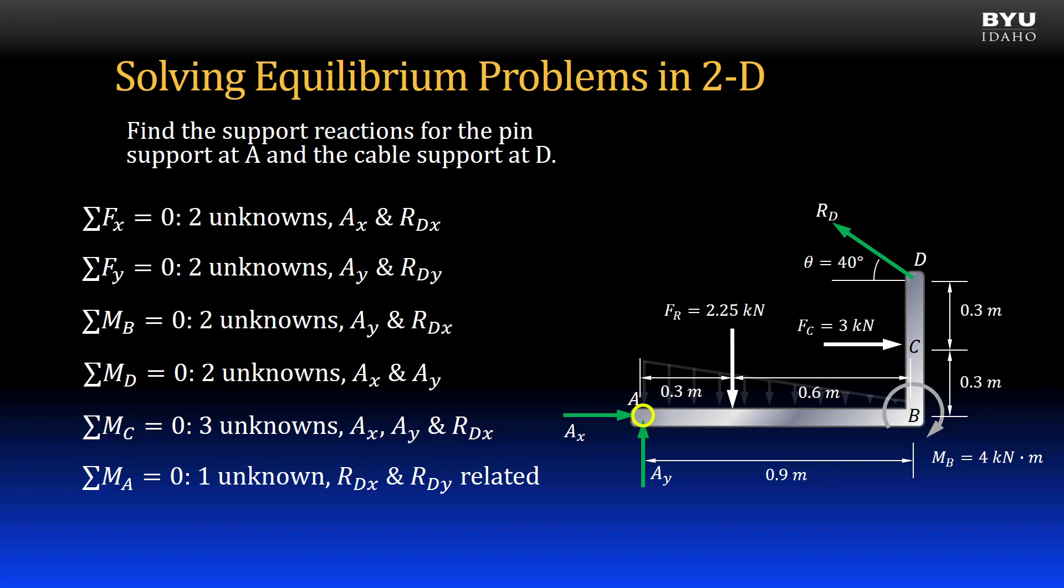If I sum moments about point A, then Ax and Ay are not included in the equation. The vertical and horizontal components of RD will be, but they are related by the angle theta. So really it is just one unknown, RD.